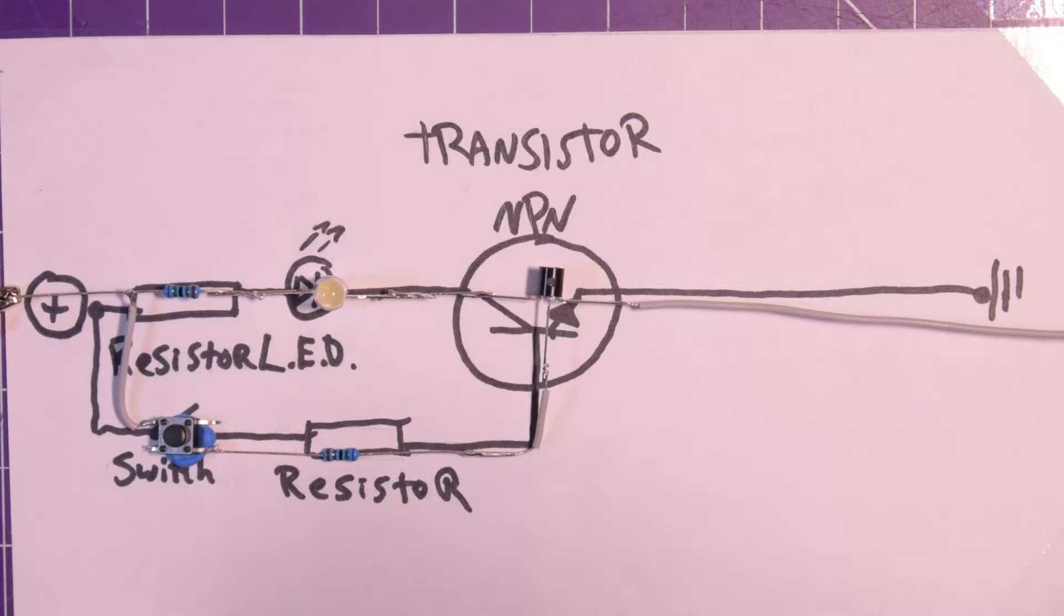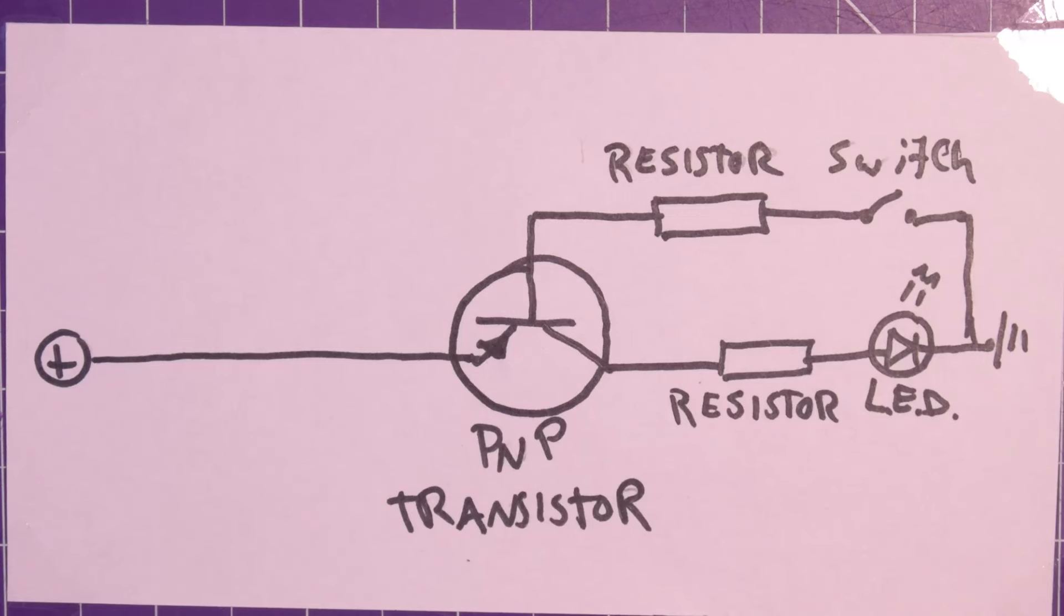So this works with an NPN transistor, but are there some considerations for a PNP? First thing you'll notice in this circuit is everything seems to be flipped left to right, and that's all because of the body diode, the diode inside the PNP transistor.